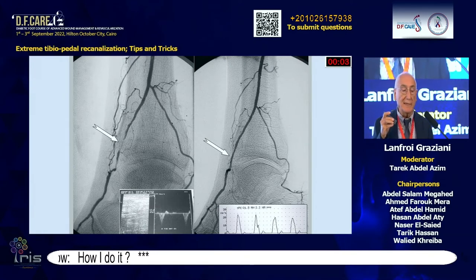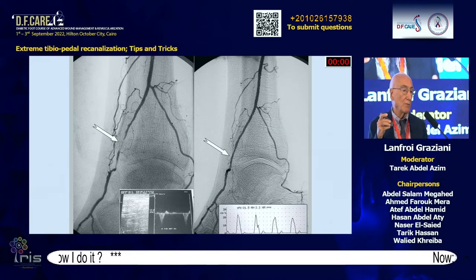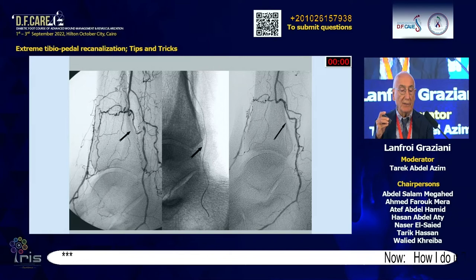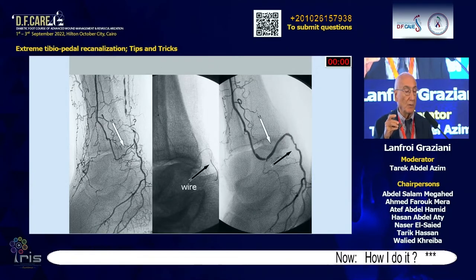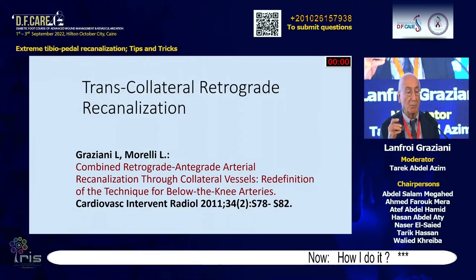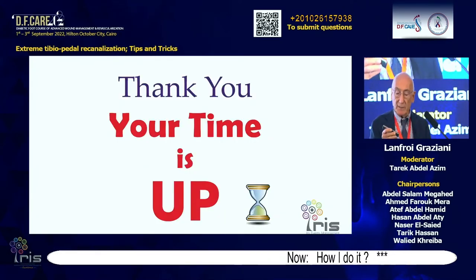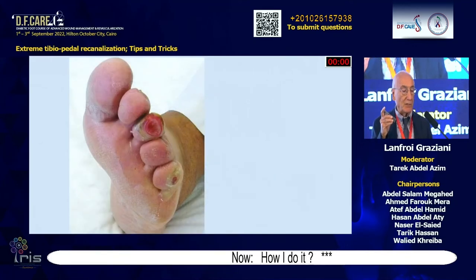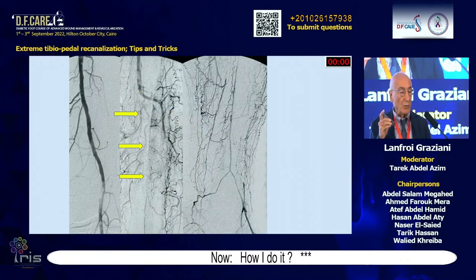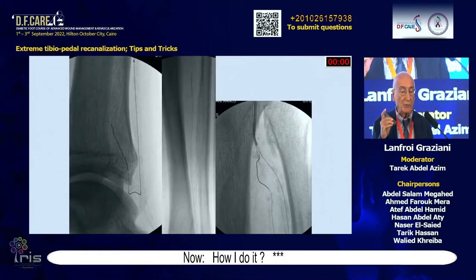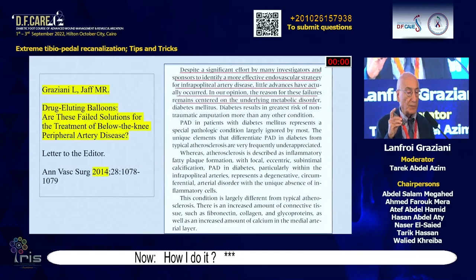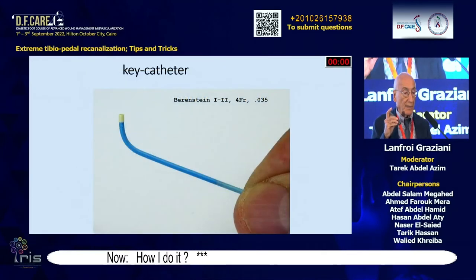The anterior perforating branch of the peroneal may also be dilated at high pressure with a coronary balloon. Most of the procedures are done using coronary balloons. For very thin arteries, a coronary wire may be used together with a coronary balloon, and success is achieved in most cases. Transcollateral retrograde technique is another possibility, published years ago. Here a tibial artery was recanalized from the retrograde approach, promoting flow.